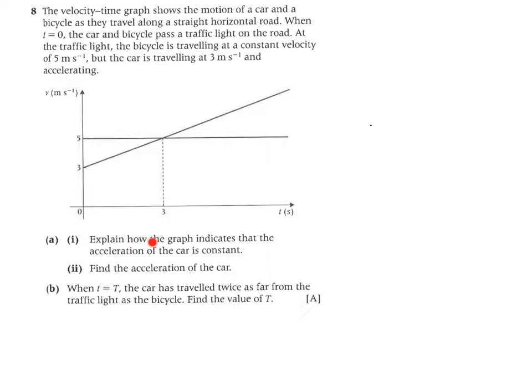Explain how the graph indicates that the acceleration of the car is constant. So in English then, I'm not going to write it down here because I don't have a lot of space. But a constant acceleration means that the gradient of your line is constant as well. Because the gradient of the line, when you look at a velocity time graph, is going to give you the acceleration. So it's a line, so it's a constant gradient, so constant acceleration. You can write something like constant gradient, so constant acceleration.